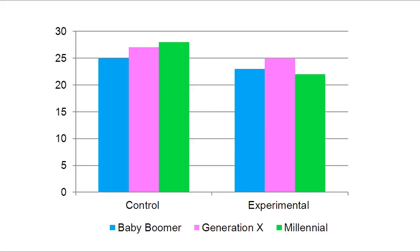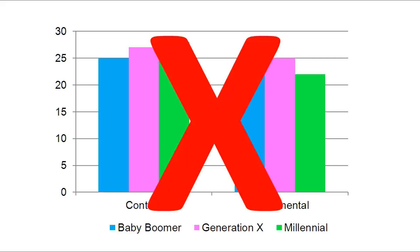Also avoid the use of color — only use color when absolutely necessary. Color requires an expensive printing process. As a result, if your figures have color, you may have to pay extra fees if your article is accepted for publication. So in most situations, all you need are black, white, and gray.